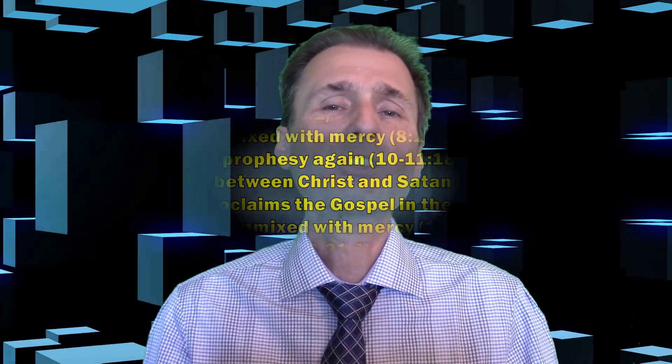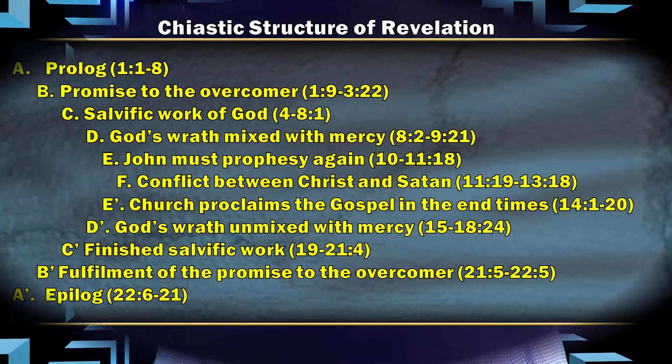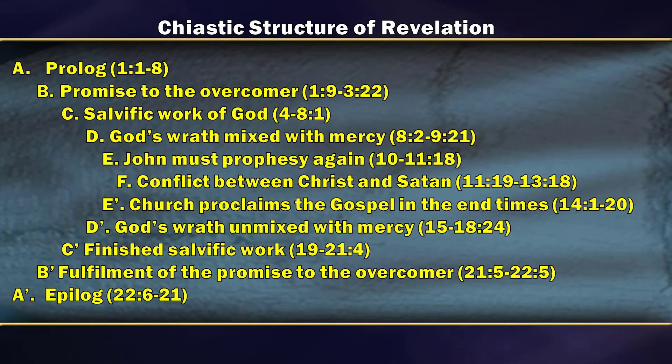Moving forward to the chiastic structure of the book of Revelation: the entire book is built on a chiastic structure. This is one proposed arrangement. We have the prologue and epilogue as A and A prime respectively. Then B and B prime: the promise to the overcomer and its fulfillment. C and C prime: the salvific work of God and the finished salvific work of God. D and D prime: God's wrath mixed with mercy, and God's wrath unmixed with mercy.